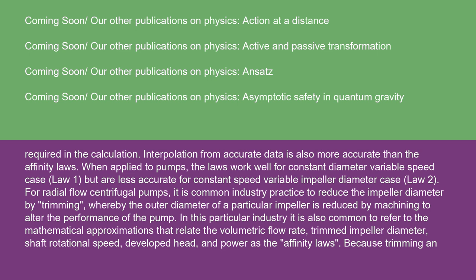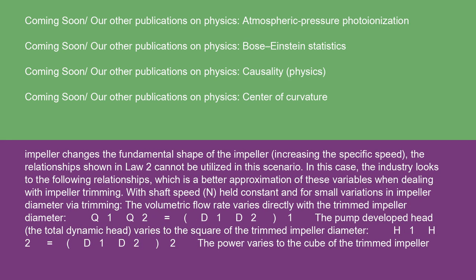In this particular industry, it is also common to refer to the mathematical approximations that relate to volumetric flow rate, trimmed impeller diameter, shaft rotational speed, developed head, and power as the affinity laws. Because trimming an impeller changes the fundamental shape of the impeller, increasing the specific speed, the relationship shown in Law 2 cannot be utilized in this scenario. In this case, the industry looks to the following relationships,